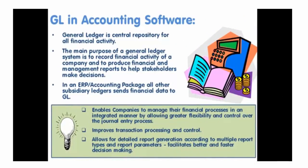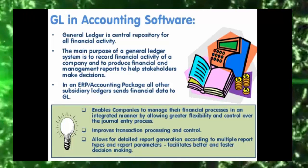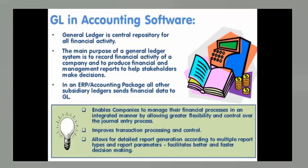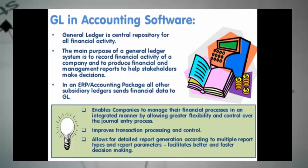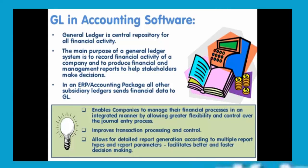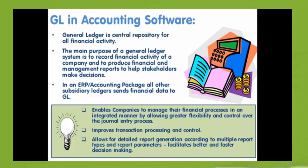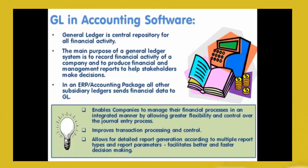GL in Accounting Software. The general ledger is the central repository for all financial activity. The main purpose of a general ledger system is to record financial activity of a company and to produce financial and management reports to help stakeholders make decisions. Stakeholders can make effective decisions only when the underlying financial data is available timely, on demand, and correct. A good general ledger software application will provide management with accurate, up-to-date information in order to make short and long-term business decisions. It also has inbuilt controls and processes necessary to ensure that the correct information is reported.